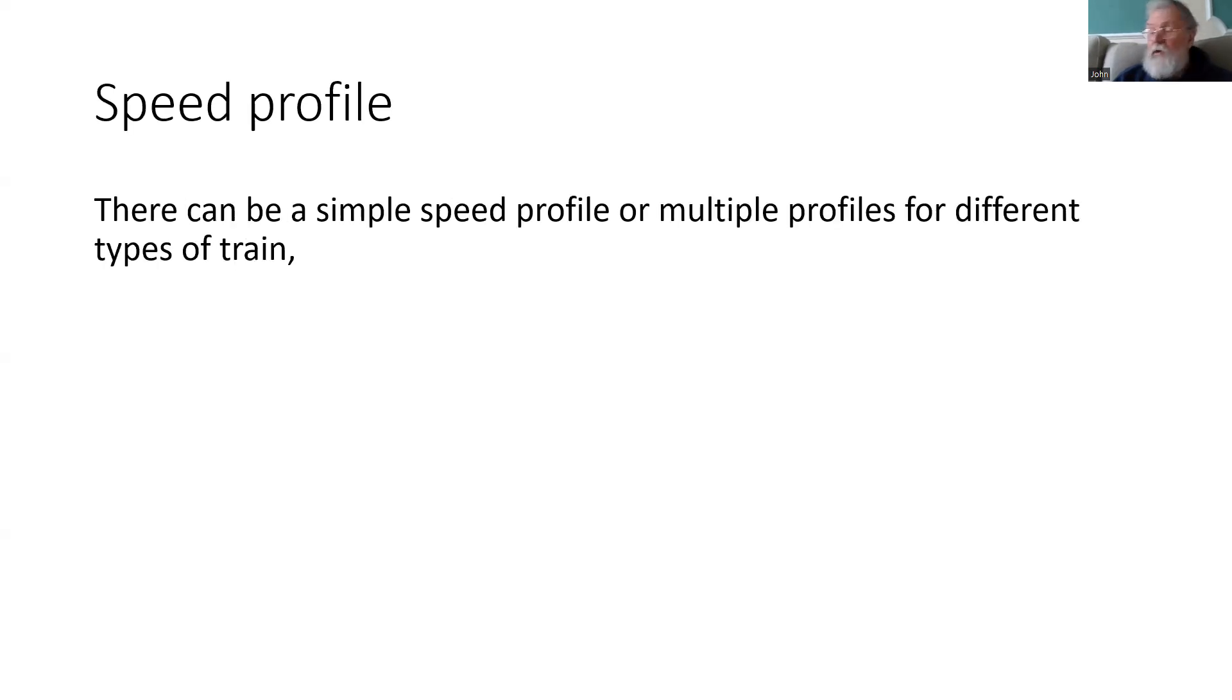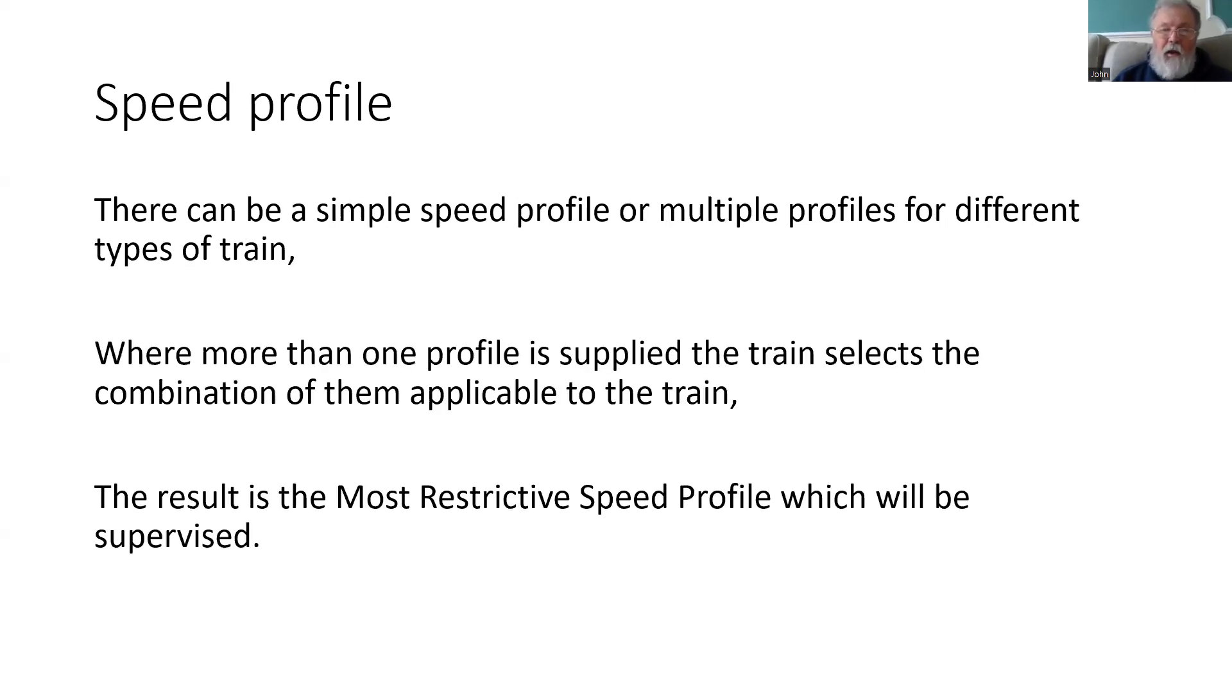For speed, it can be just a simple speed profile where all trains travel at the same speed, or there can be multiple profiles for different types of trains. If there are more than one, the onboard will compare all of the profiles applicable for the train, selects the combination of them, and the result is what's known as the most restrictive speed profile, and it's that which will be supervised.